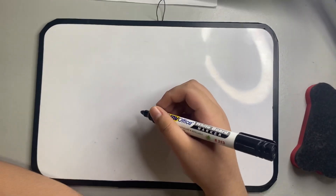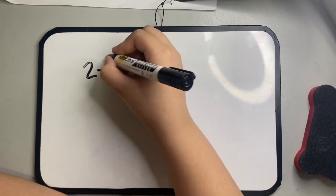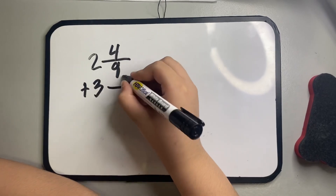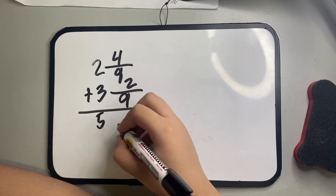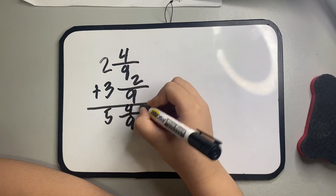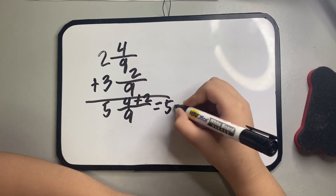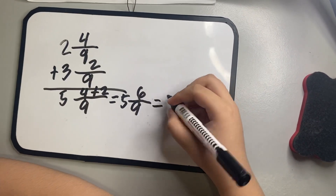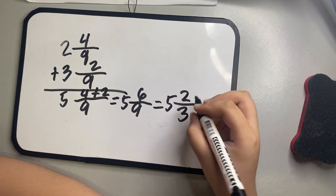Second, addition of mixed numbers with similar denominator. Let's solve 2 and 4/9 plus 3 and 2/9. First, add the whole numbers. Then copy the denominator. Then add the numerator. Then simplify it. Here's the final answer.